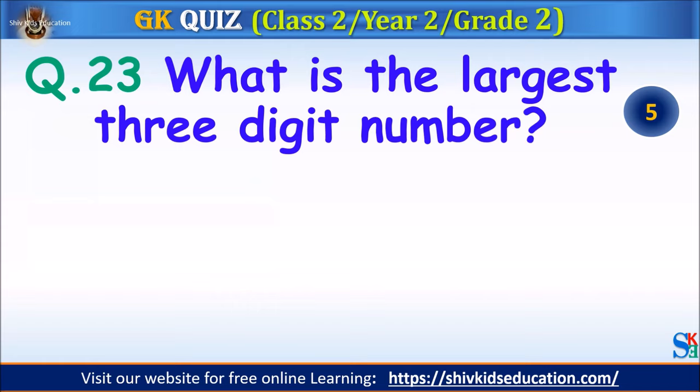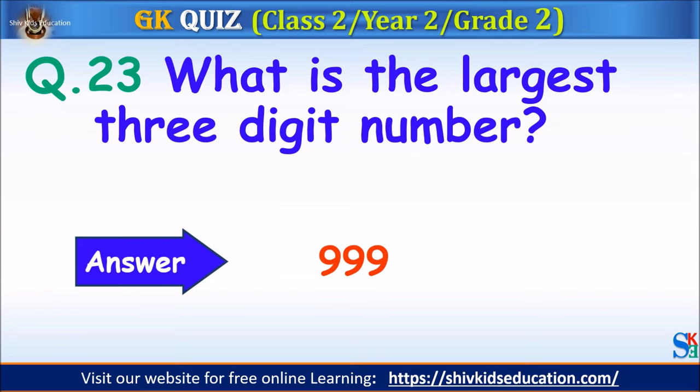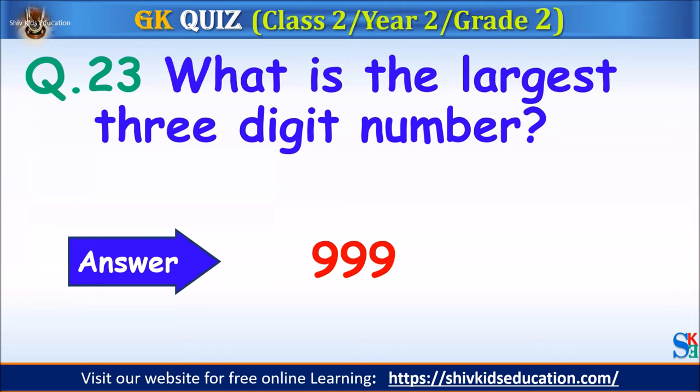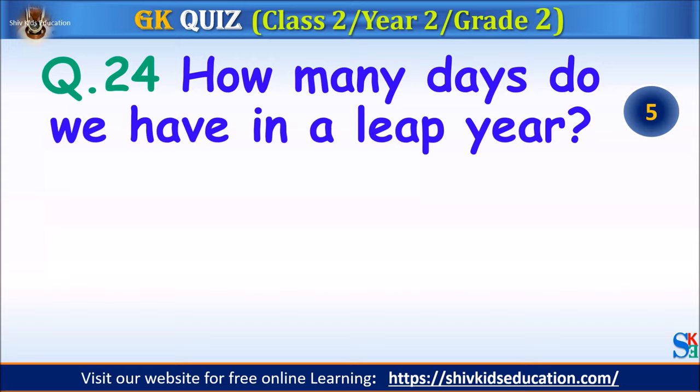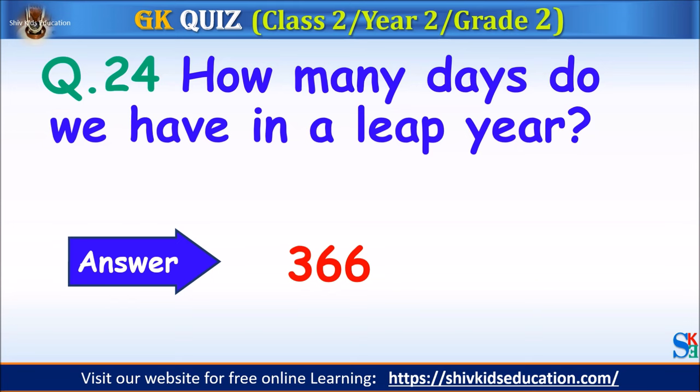Question 23: What is the largest three-digit number? Your time starts. The answer is 999. Question 24: How many days do we have in a leap year? Your time starts. The answer is 366.